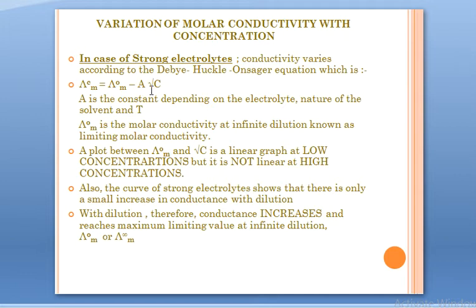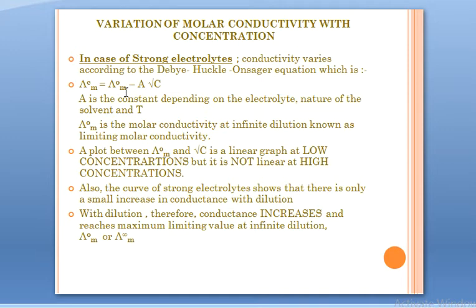For strong electrolytes, we have a proper equation called the Debye-Hückel-Onsager equation: λ_c^m = λ°_m − A√c. Here, λ_c^m is the molar conductivity at concentration c; λ°_m is the limiting molar conductivity, which is the molar conductivity at infinite dilution; A is a constant whose value depends on the nature of the electrolyte, the nature of the solvent, and the temperature.